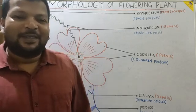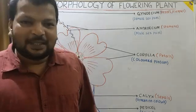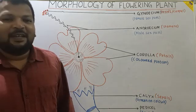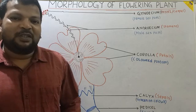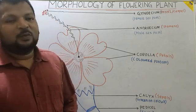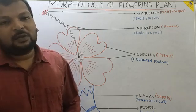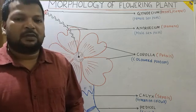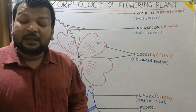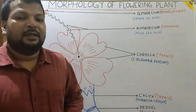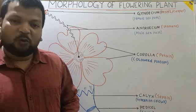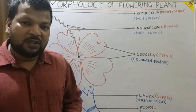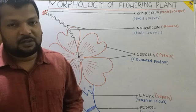Hi guys, today I am starting another chapter that is Morphology of Flowering Plants. What is Morphology? Morphology comes from two words: one is 'Morpho' and the other is 'Logos'. Morpho means external structure — the things we observe through our naked eye. Logos means to study. So Morphology is the study of external structure.